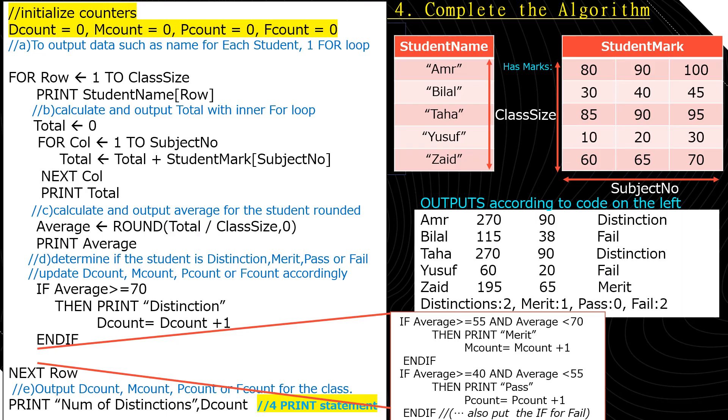All right, after we've completed that for loop, which iterates through each student of size class size, now we are ready to show the summary for the whole class. So after next row, we're going to print the number of distinctions is D count, the number of merits is M count, the number of pass is P count, and the number of fail is F count. So now we've finished all the requirements for this 15 mark question.